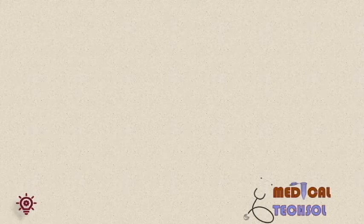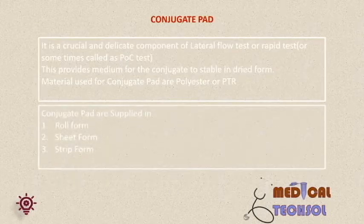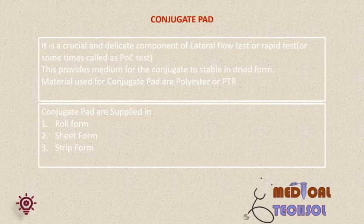Conjugate pad. It is one of the crucial and delicate components of the lateral flow or rapid test. The conjugate pad provides the medium for the conjugate to remain stable in a dried form. Materials used for the conjugate pads are polyester or PTR, supplied in the form of roll, sheet, or strip.